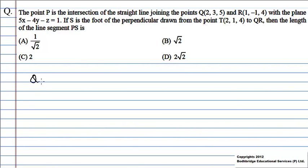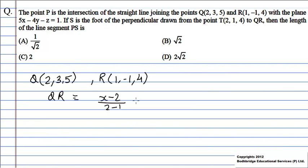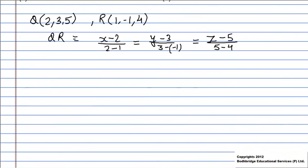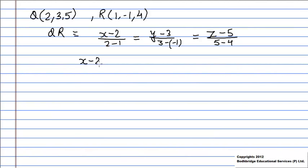Given the points Q and point R, the equation of the line QR is given by (x - 2)/(2 - 1) = (y - 3)/(3 - 1) = (z - 5)/(5 - 4). Solving this, we get (x - 2)/1 = (y - 3)/4 = (z - 5)/1. Let us say it is equal to k.